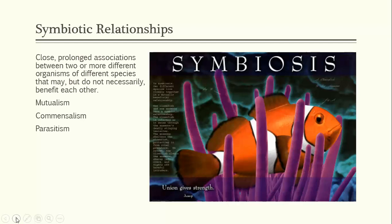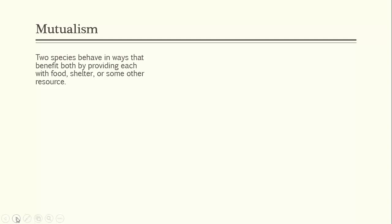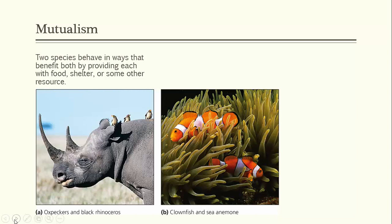In mutualism, two species behave in ways that benefit both by providing food, shelter, or some other resource. One example is the sea anemone and clownfish: the clownfish protects the anemone from some predators, while the anemone's stinging cells protect the clownfish. The clownfish can also eat detritus left behind when the anemone feeds.